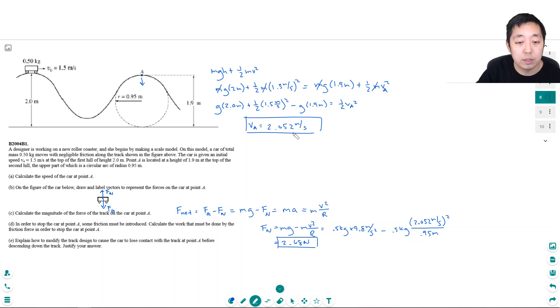Right now it has a velocity of 2.052 meters per second. If I want to get rid of that velocity, friction would have to remove that kinetic energy. So the work done by friction would have to equal the kinetic energy it currently has. I've got to remove that kinetic energy.